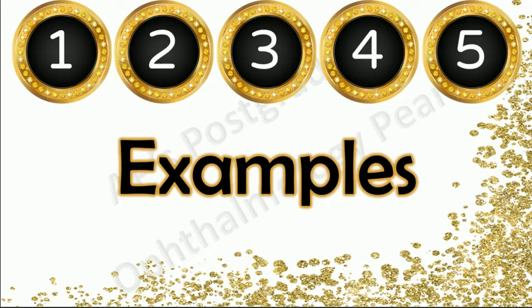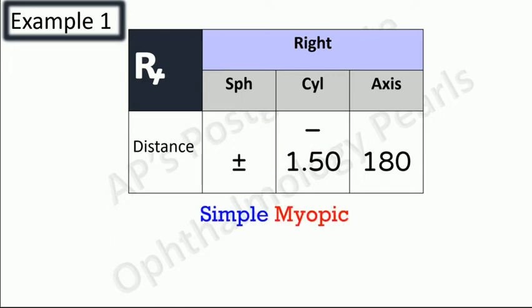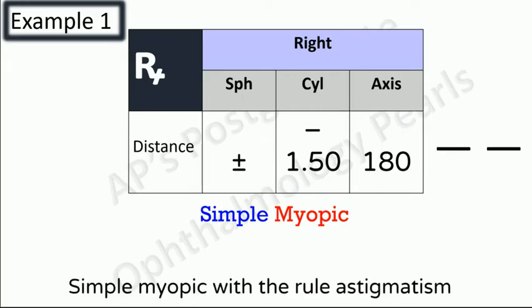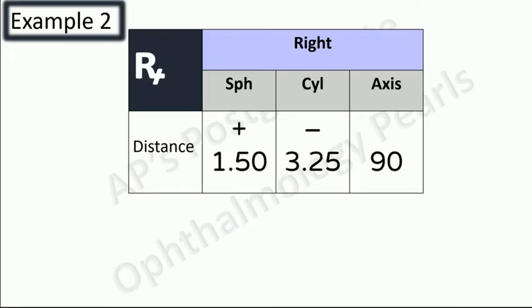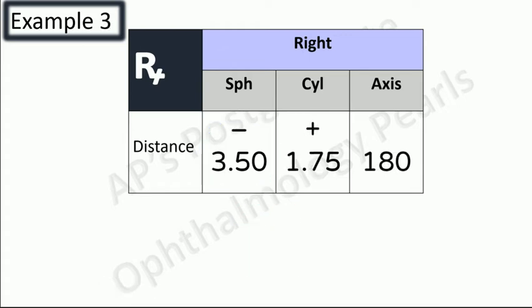You may pause the video to work out the examples yourself. Example one: sphere is zero so it's simple astigmatism; sign of cylinder is minus so myopic; both lines are horizontal so it's with-the-rule — this is simple myopic with-the-rule astigmatism. Example two: sphere has a number, signs are different, sphere is minimal compared to cylinder so it is mixed astigmatism; one line is horizontal, one is vertical so this is mixed against-the-rule astigmatism.